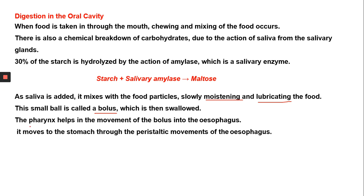That junction is called the pharynx. The pharynx helps in the movement of the bolus into the esophagus. The esophagus is also called the food pipe, and it opens into the stomach. The movement of food into the esophagus occurs through peristaltic movements — rhythmic contractile movements of the muscular esophagus.